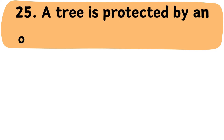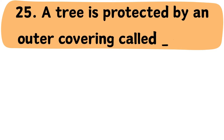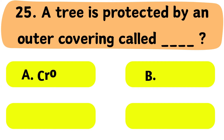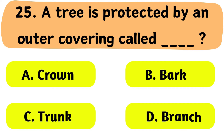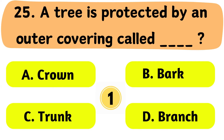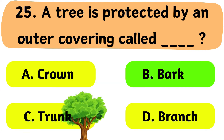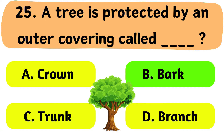Question No. 25: A tree is protected by an outer covering called what? A. Crown. B. Bark. C. Trunk. D. Branch. The correct answer is Option B: Bark.